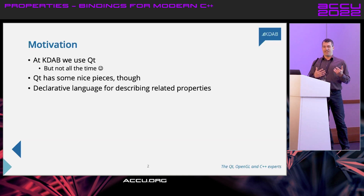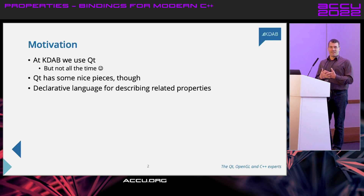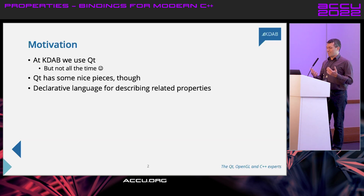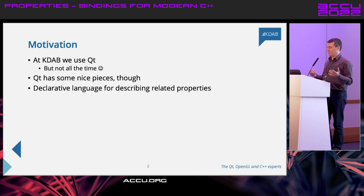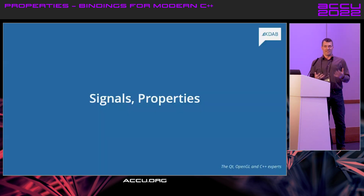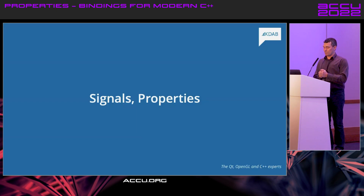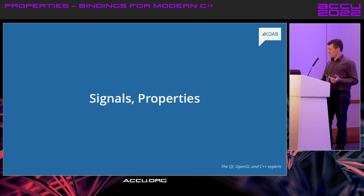We were working on, and increasingly are on, non-Qt-based projects. We were building some very large code bases where we didn't use Qt, and we were like, we're kind of missing having the properties and the declarative features of Qt. Can we create them ourselves? So we had a go at that, and this talk is basically what we ended up with. We'll start with some building blocks. Before we can get to the fun stuff — the declarative properties and bindings — we have to get signals and properties working first, which are standard features in Qt but not in C++.